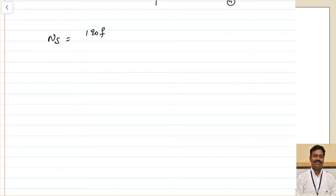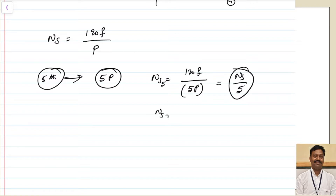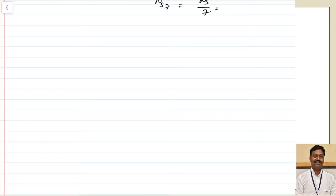What will be the speed of these harmonics? The synchronous speed Ns = 120F / P. For the fifth space harmonic, it will have five times the number of poles compared to the fundamental, and it is produced because of the fundamental frequency only. So Ns for the fifth harmonic = 120F / (5P) = Ns / 5. Similarly, Ns for the seventh harmonic = Ns / 7, and so on. Speed will be less. Out of the two harmonics — 6k + 1 and 6k − 1 — let us see what the case is for the fifth harmonic, which rotates at a speed of Ns/5.